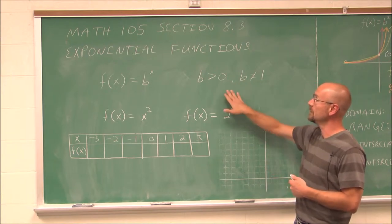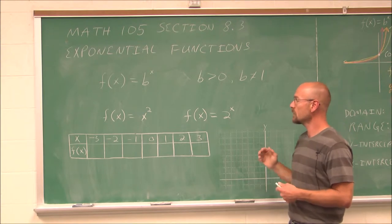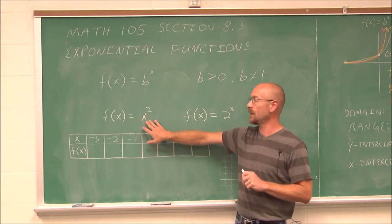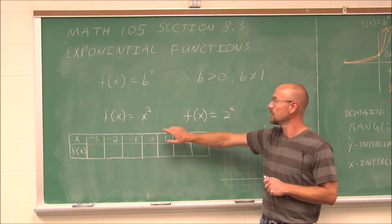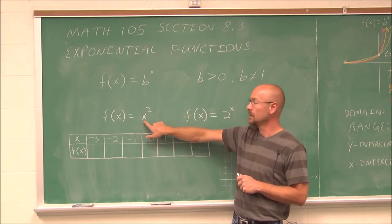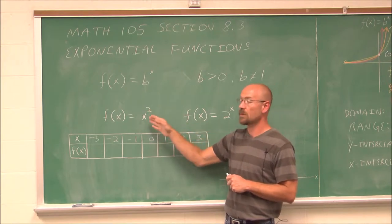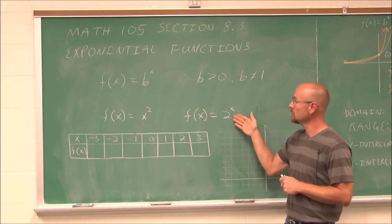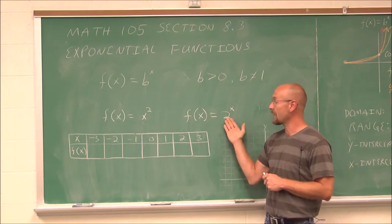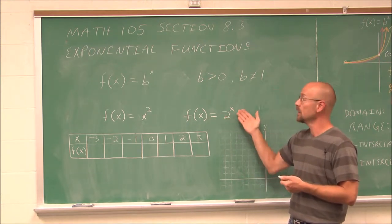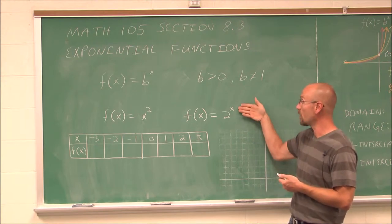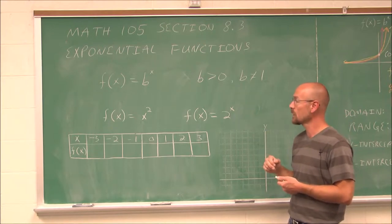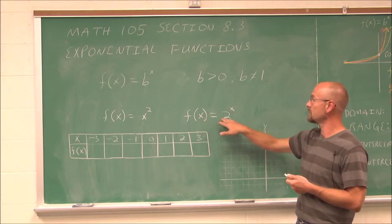So those are the restrictions on the base. Let's look at something familiar. Here we have f of x equals x squared. This is not an exponential function — this is what's called a power function, because we have a base that's changing and the power is constant. An exponential function would be something like 2 to the x, where we have a constant factor of 2 as our base being raised to the variable. To be an exponential function, our variable or input value has to be in the exponent — it has to be the power that is changing.